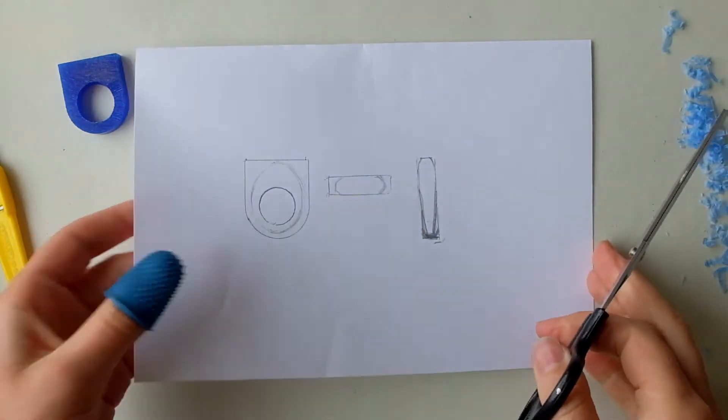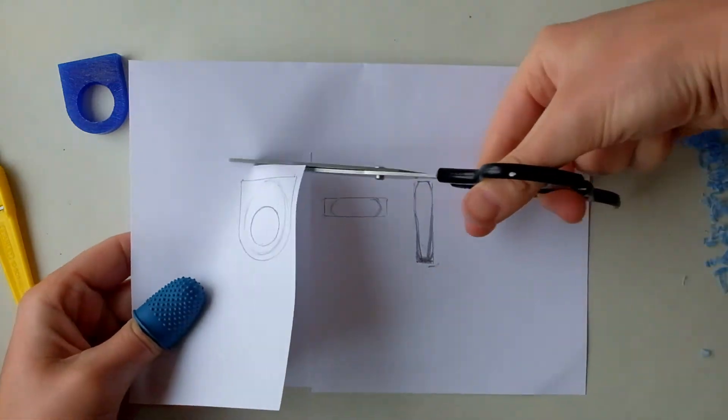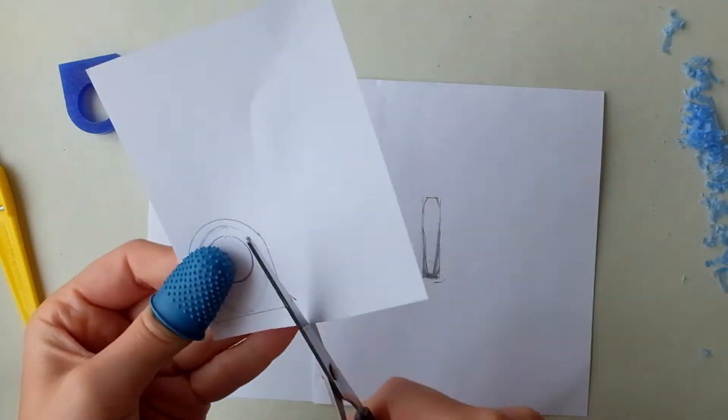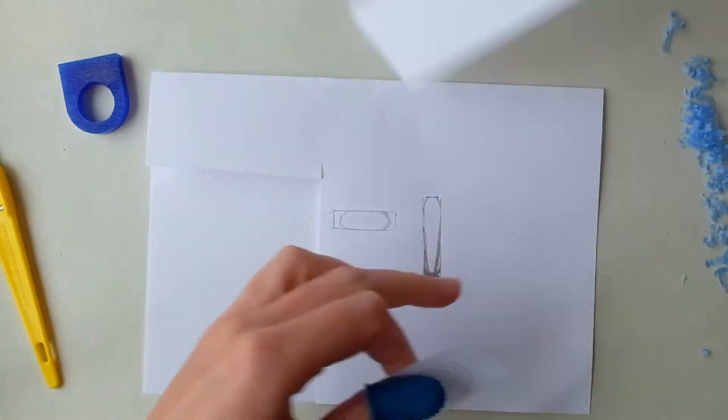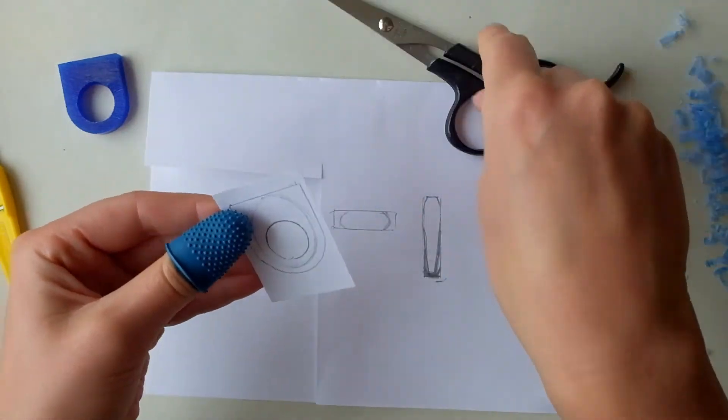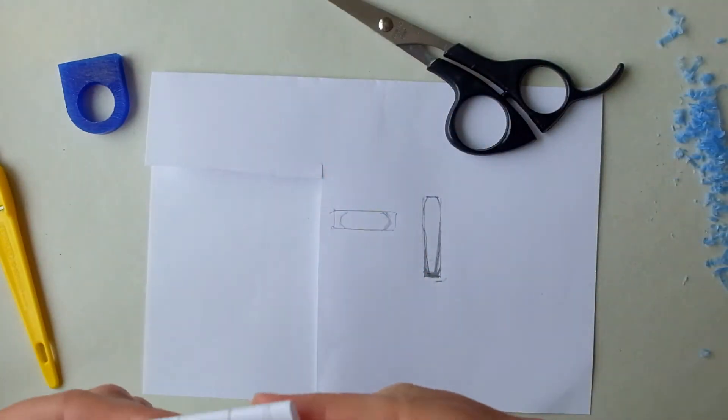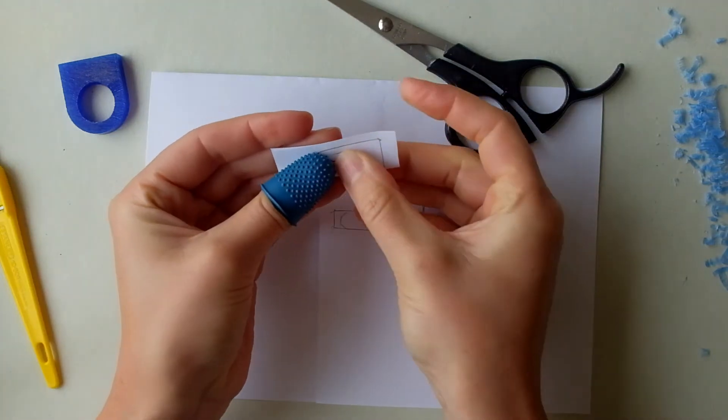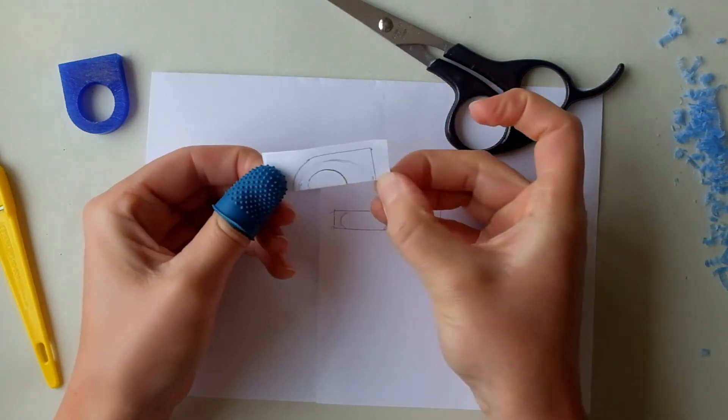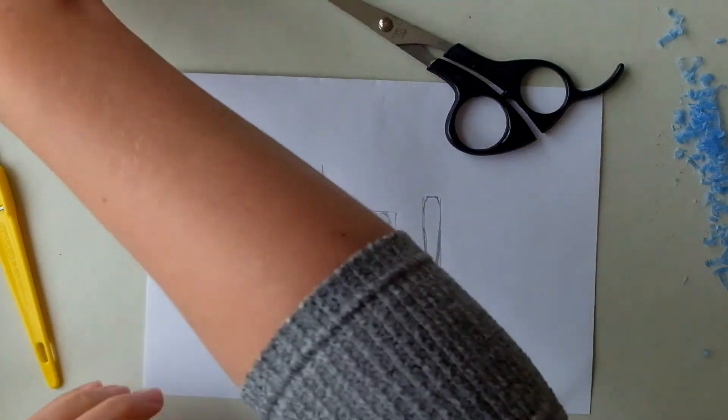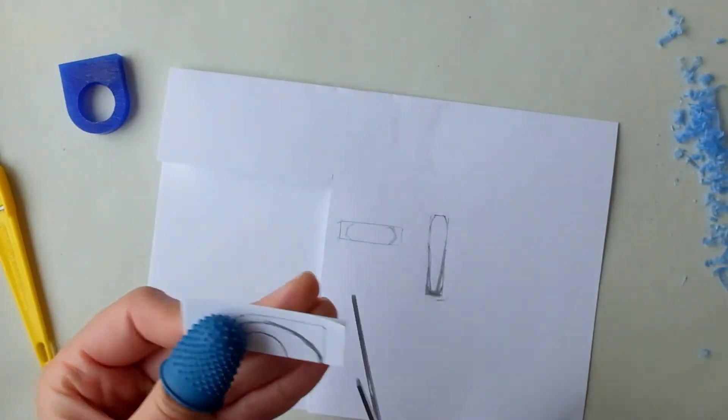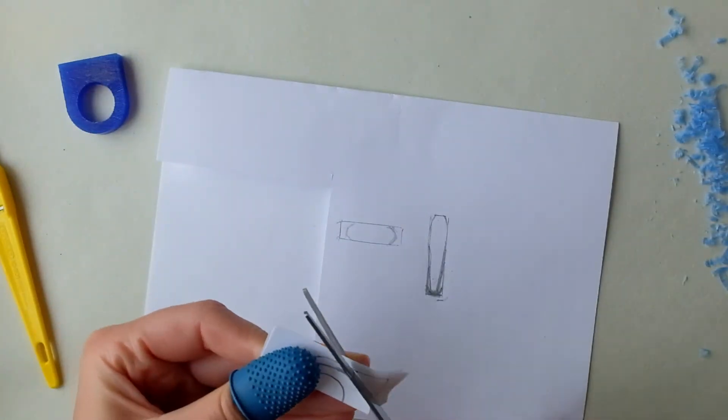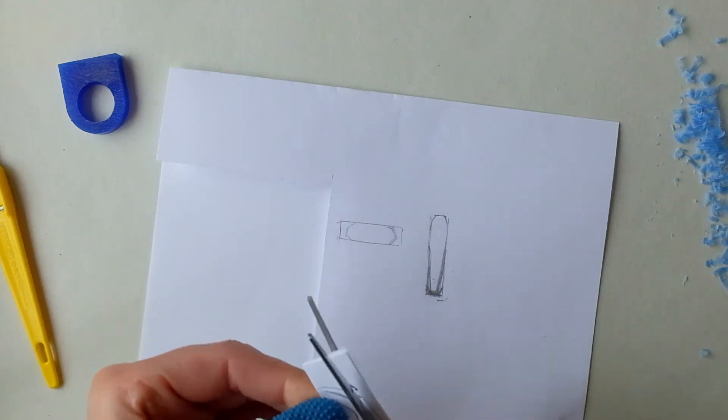So I want this design to be very symmetrical. So I'm going to cut around my main design, fold it in half, and then I'm going to cut my little design out so that I can have both sides the same. If you don't have a pair of scissors to hand, you can use the craft knife provided to do this.